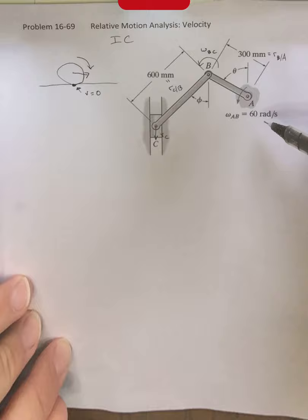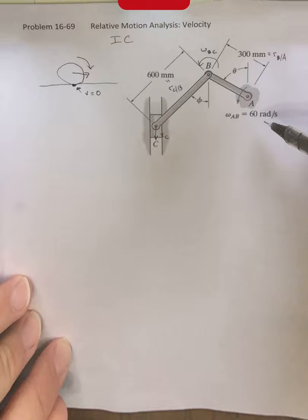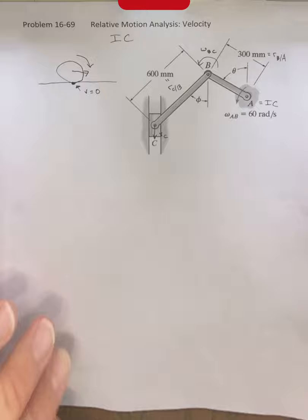Now, for link AB, we don't have to worry about an instantaneous center because it is, in fact, rigidly rotating about that point, meaning for link AB, point A already is an instantaneous center. The idea now is that we want to find an appropriate point for this link BC.